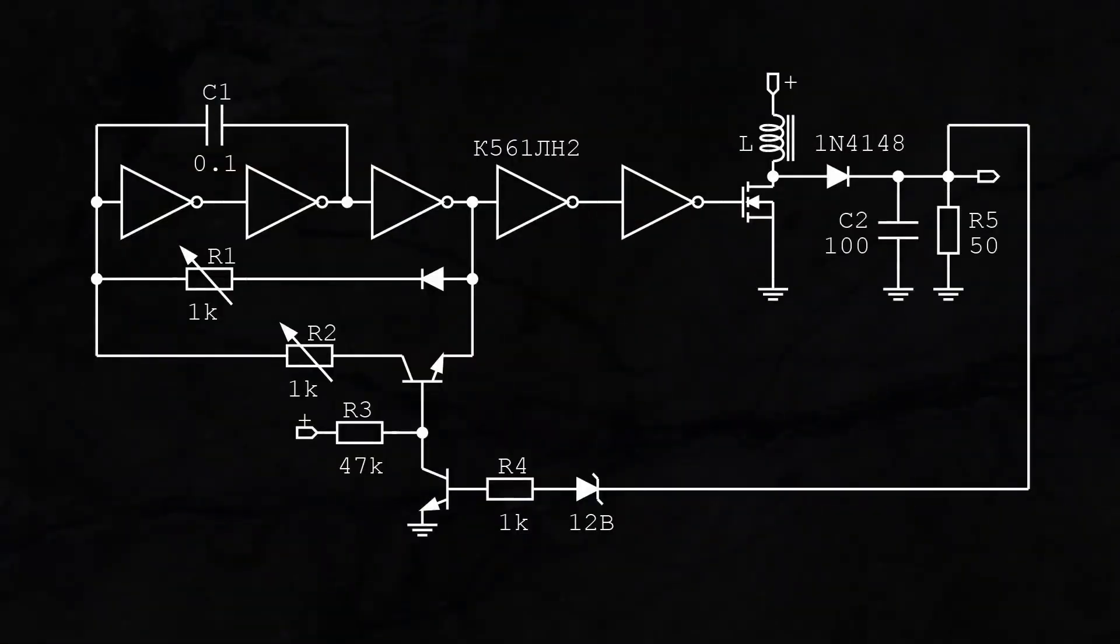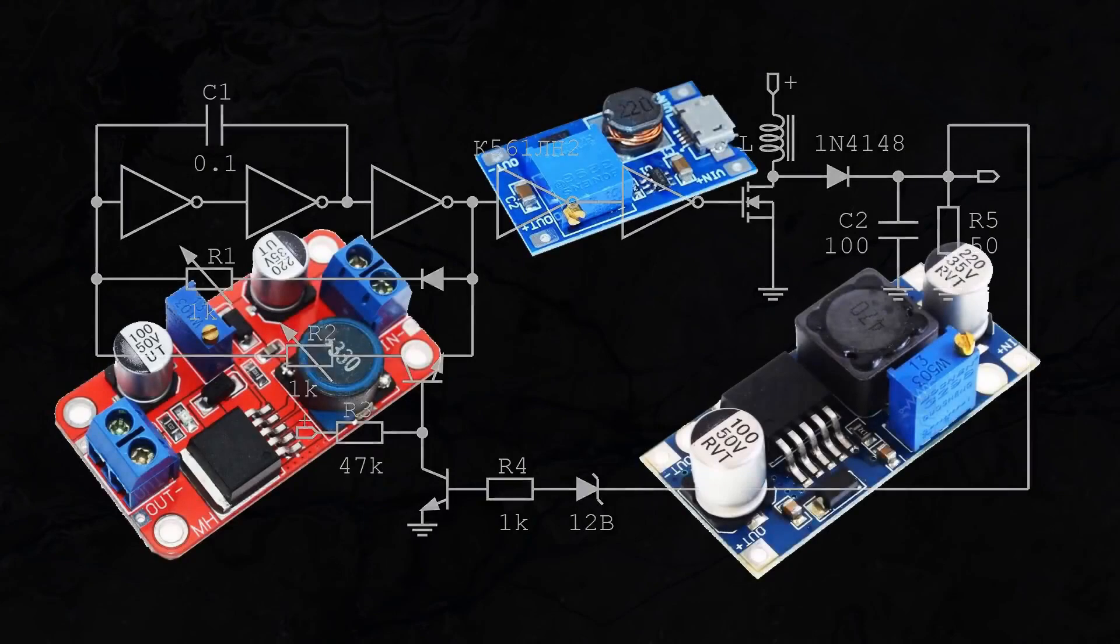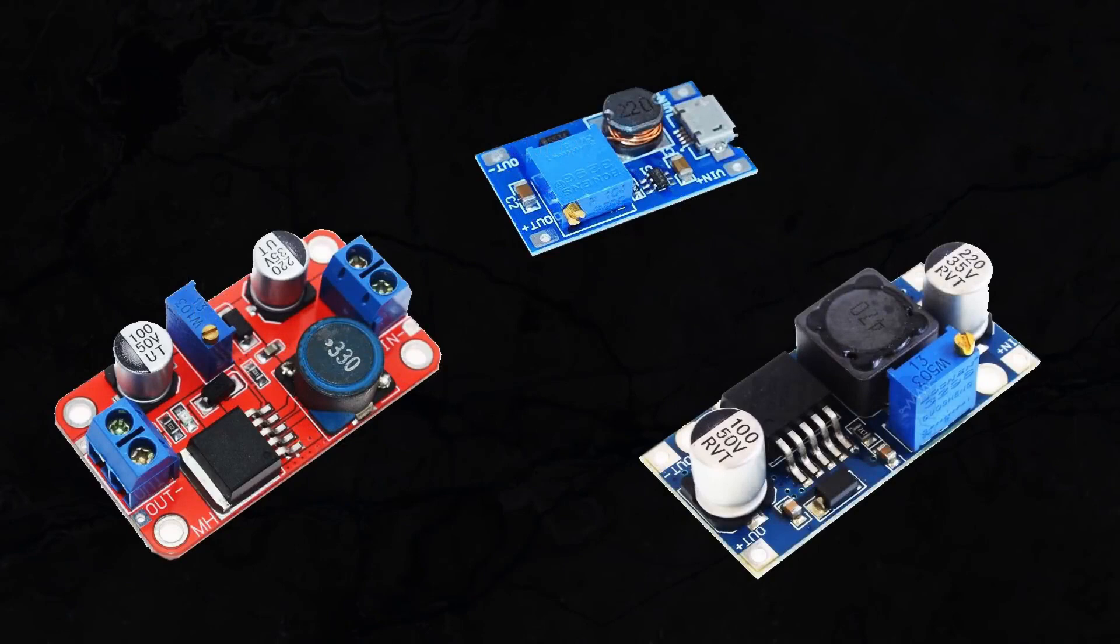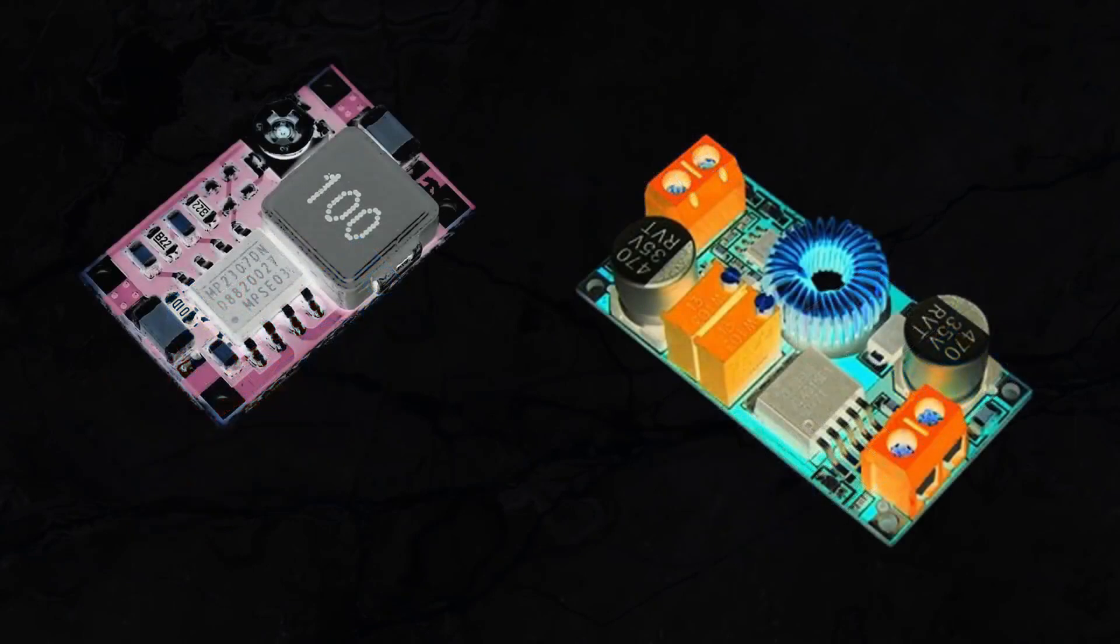I can recommend replicating such a stabilizer only if you need to power a low power load of tens of milliamps, no more. For more powerful consumers, I think it's still easier to assemble a DC-DC converter on a specialized microchip. Fortunately, there are many of them available now, or find a power supply with a voltage higher than what you need and make a step-down converter, which we might also discuss if you like the video.